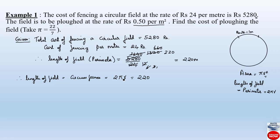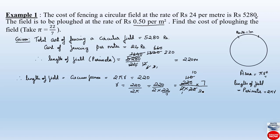Now we have to find the radius. So r equals 220 divided by 2π. The value of pi is given as 22 divided by 7. Substituting: r = 220 ÷ (2 × 22/7) = (220 × 7) ÷ (2 × 22). After cancellation, 5 × 7 = 35. So the radius is equal to 35 meters.